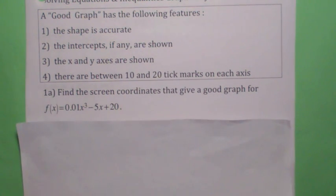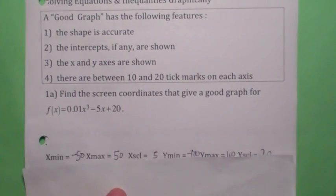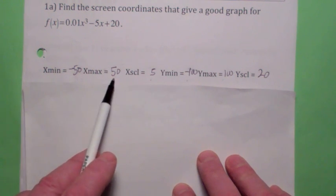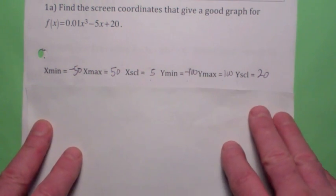Hit the pause button. One window that will work would be negative 50 to 50 on X with X scale 5 and negative 100 to 100 on Y with Y scale 20.